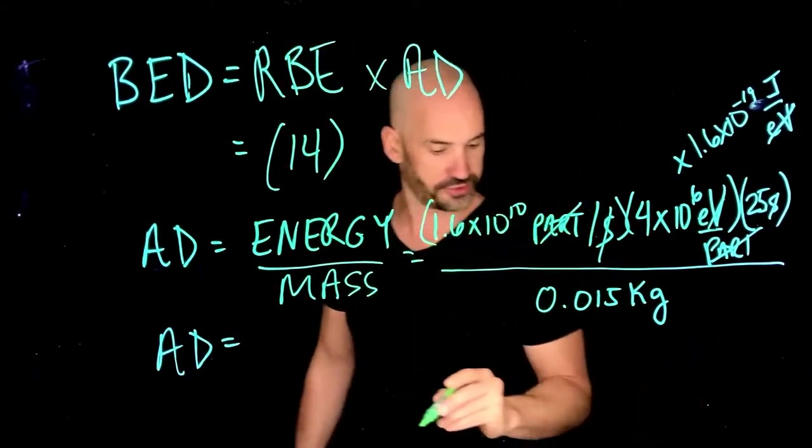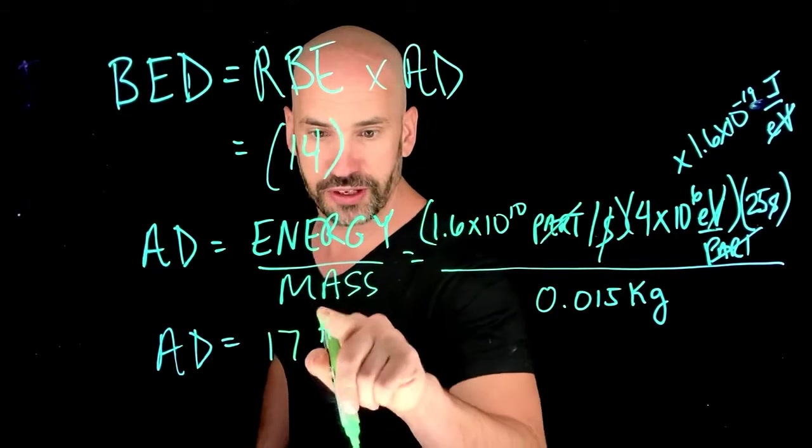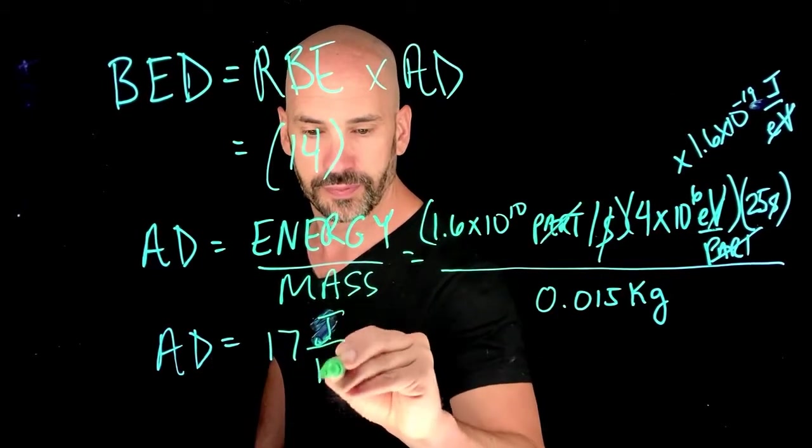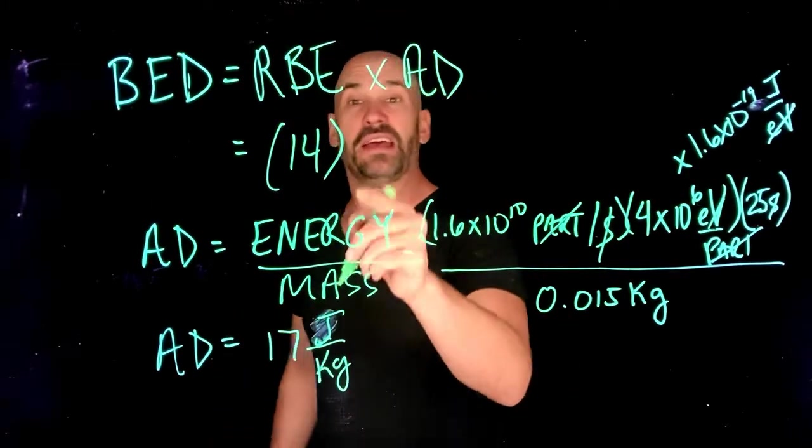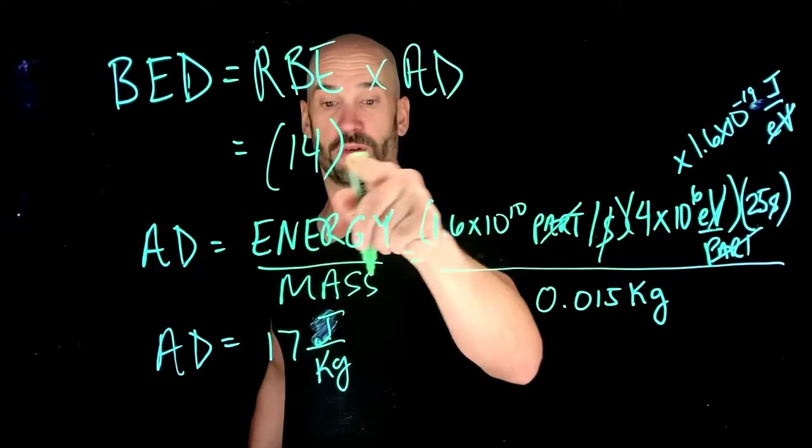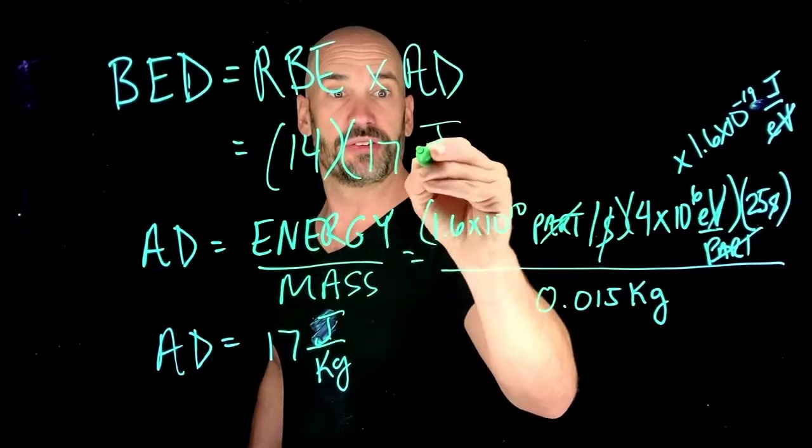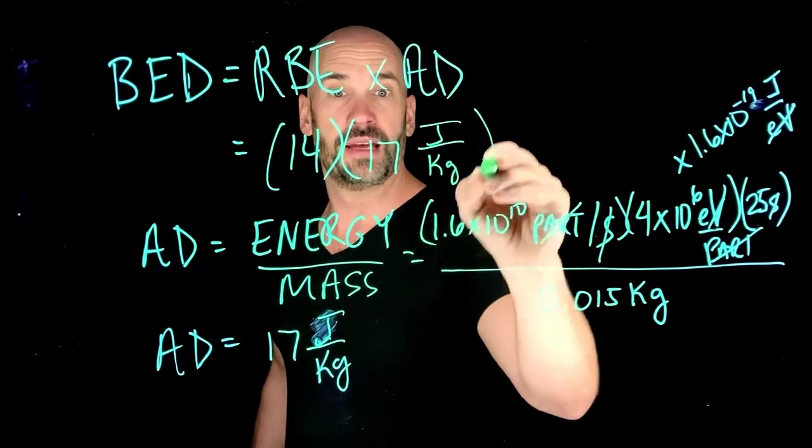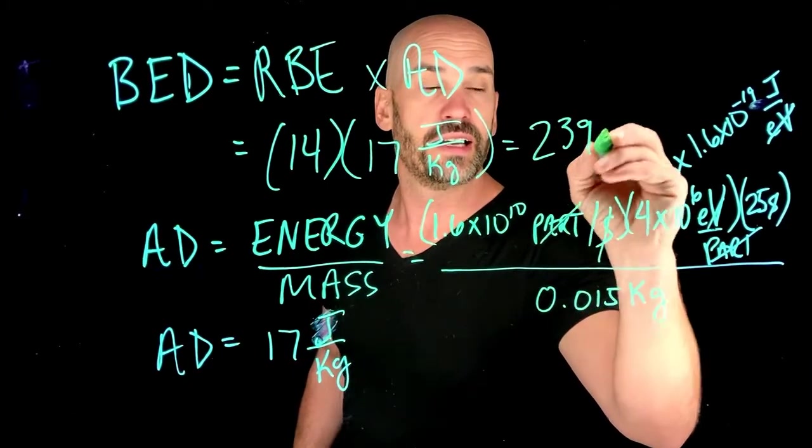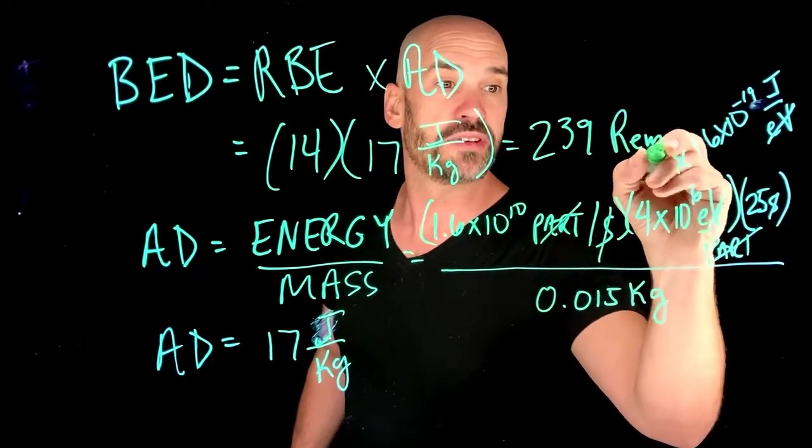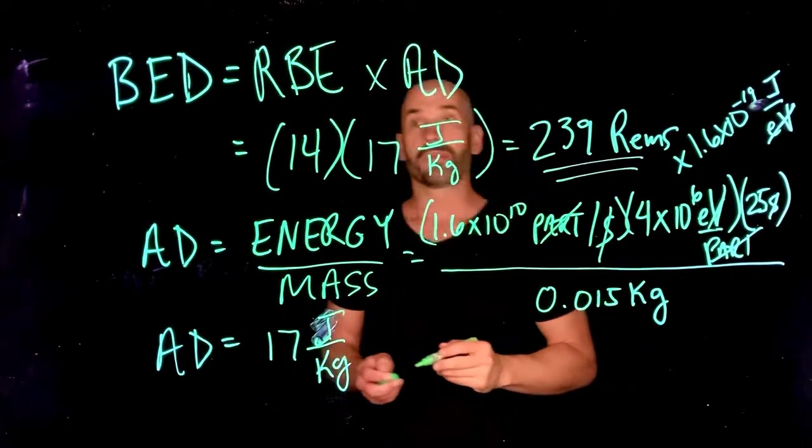That's our absorbed dose. Now we already know the RBE is 14, so we just want to multiply that by 17 joules per kilogram, and we get a value of 239 REMs. REMs is the unit for the biological equivalent dose.